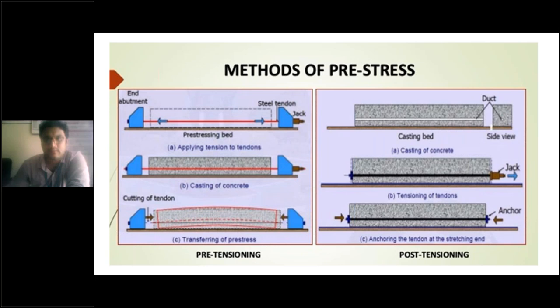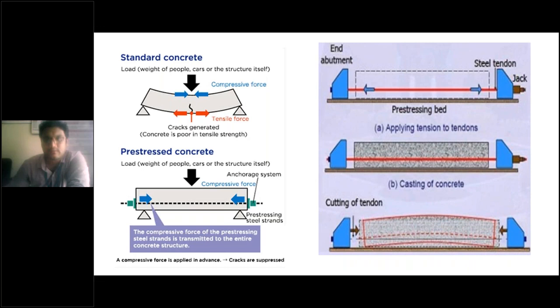These pictures give us a clear view of what exactly standard reinforced concrete and prestressed concrete look like. As we know, in a beam above the neutral axis it is in compression and below it is in tension — in the tension zone cracks will generate because concrete is poor in tensile strength. This is the clear idea of why standard concrete was developed into prestressed concrete with more advantages.